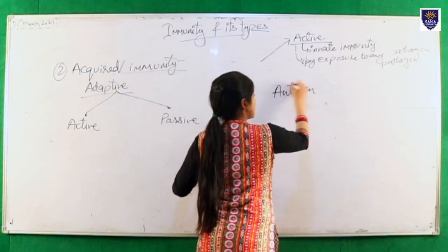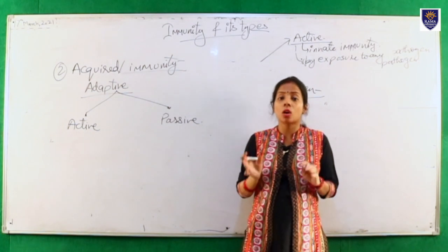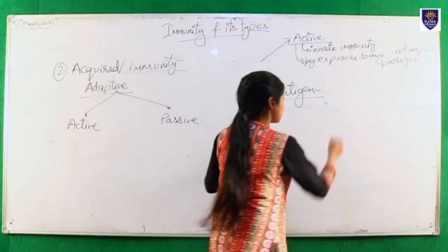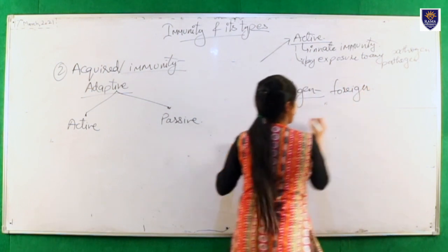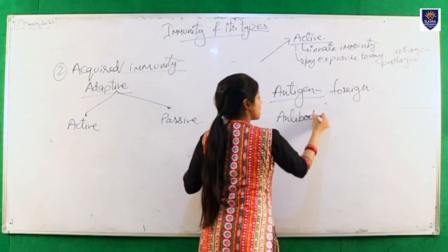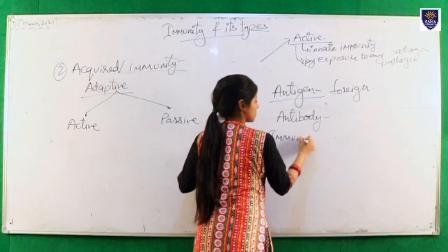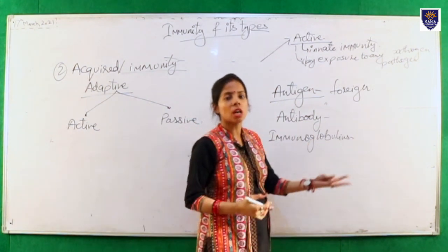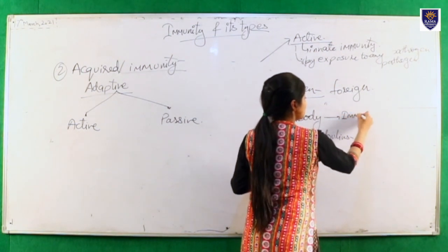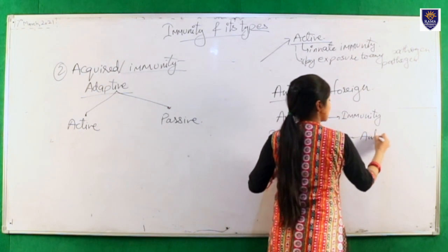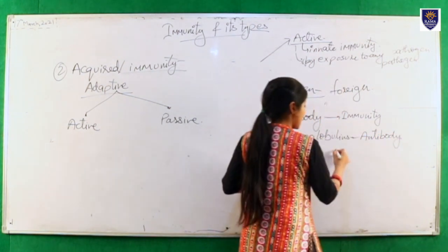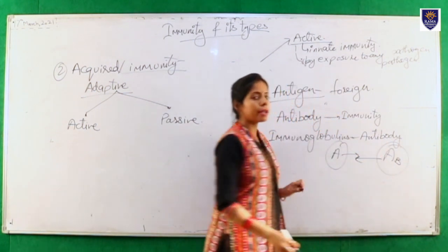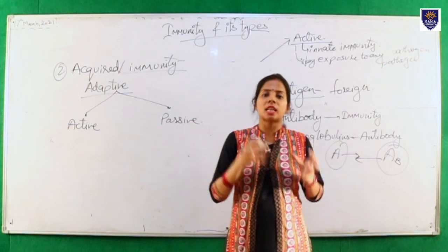An antigen is any foreign molecule or foreign substance not normally present in our body that tries to enter it. Antibodies are also known as immunoglobulins. Immunoglobulins are substances that provide immunity against antigens or bind to antigens. Antibodies are specific to antigens — for a given antigen entering our body, only the corresponding antibody will bind to it, not any other antibody.